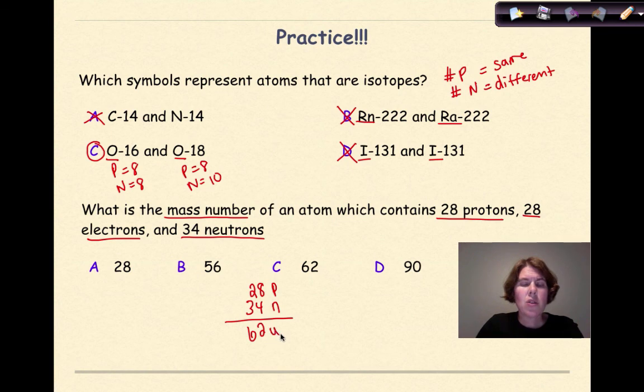So 62u for my mass. 28 protons, 34 neutrons. Yep, my math works out. And do any of these answers work out to be that? Oh yes, they do. And it's C again. Obviously I'm really original. If you got both of those answers right, good for you.